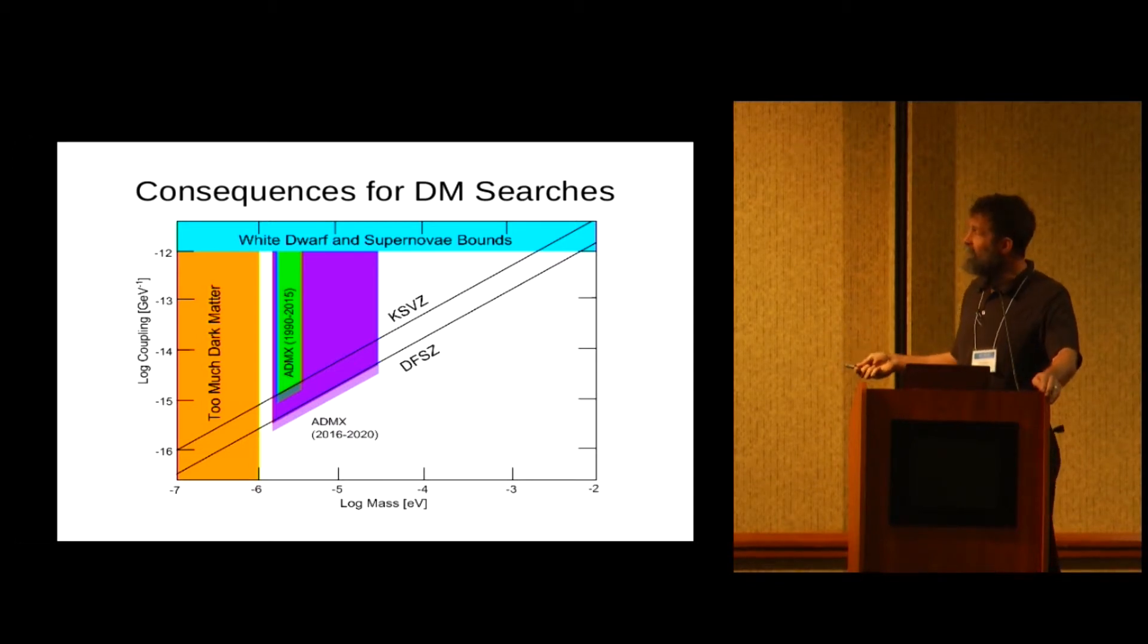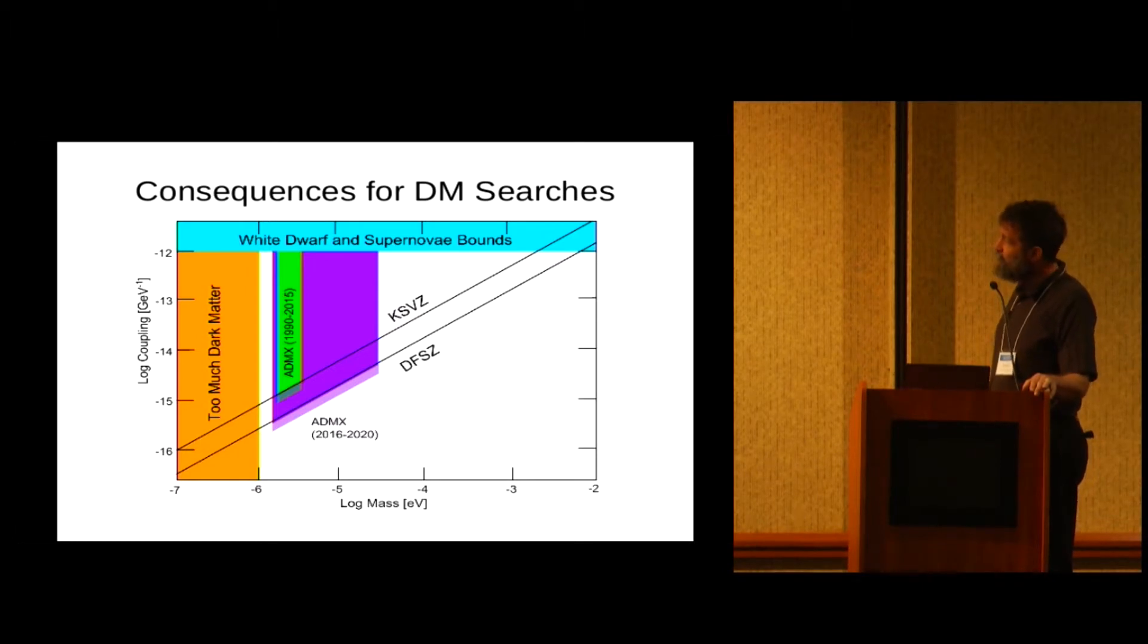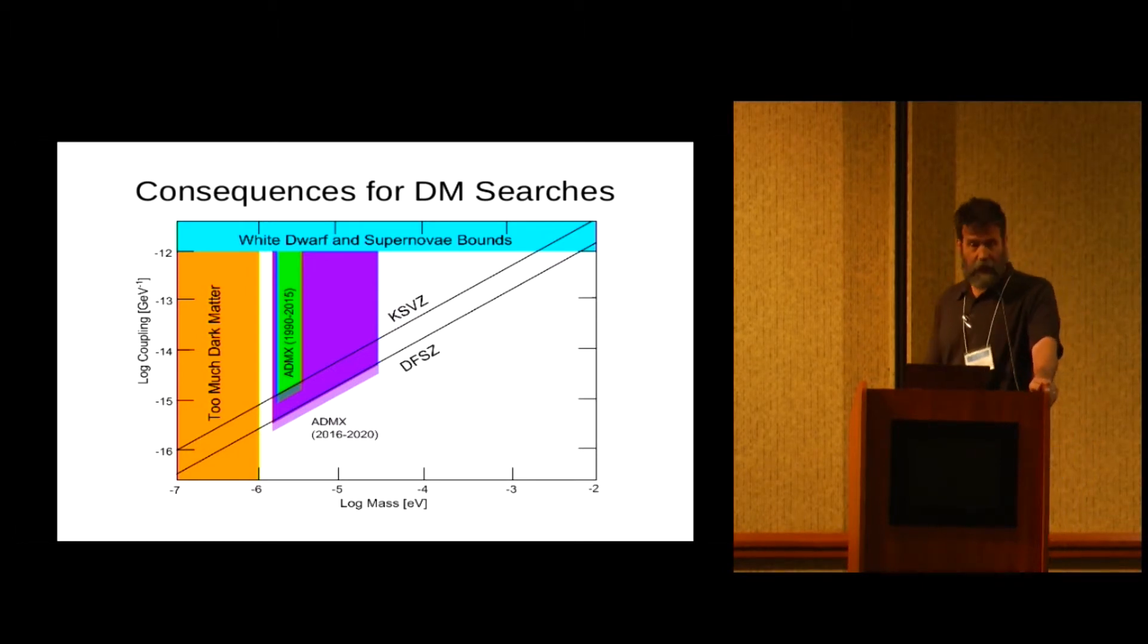With our new model, based on our PRAC simulation, notice that the shaded region gets extended downwards. So this translates into real dollars because the area of this shaded region is determined by how long you run the experiment. And so if we can run the experiment shorter, it's probably a burn rate of a million dollars a year or more. So that's an unexpected consequence of having a population of galaxies.